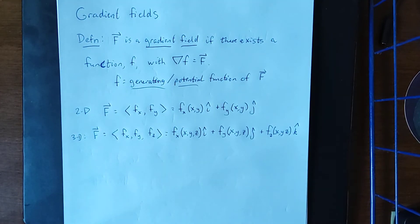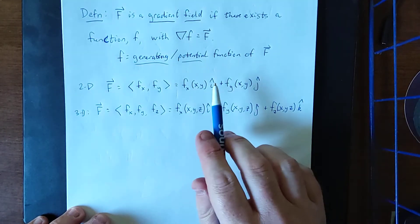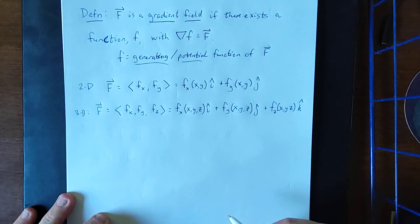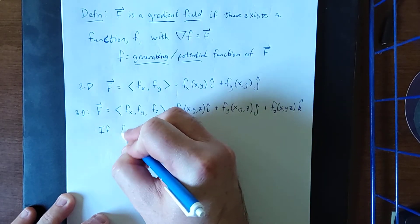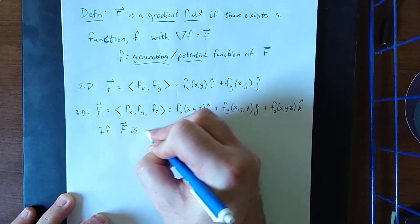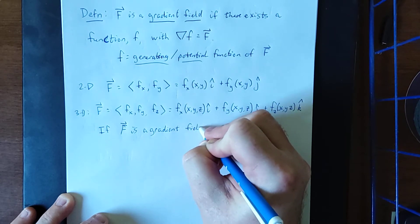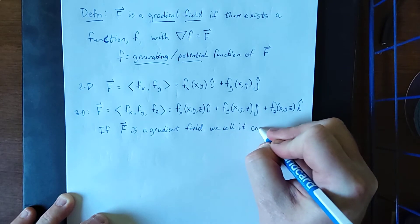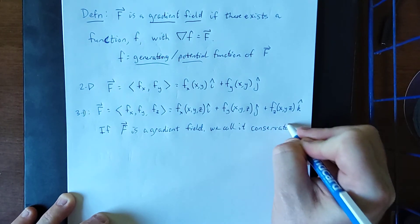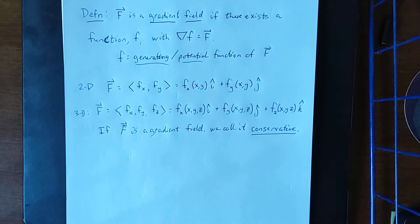There is a test to figure out if your given vector field is actually a gradient field. If capital F is a gradient field, we call it a conservative vector field — conservative based on conservation principles, which we'll discuss later in the chapter.